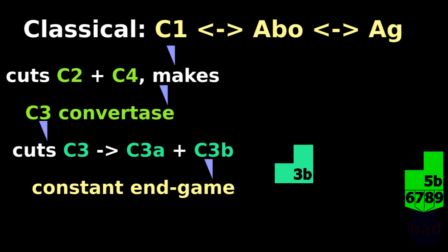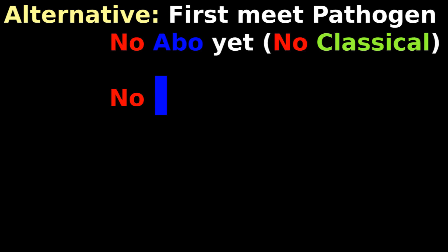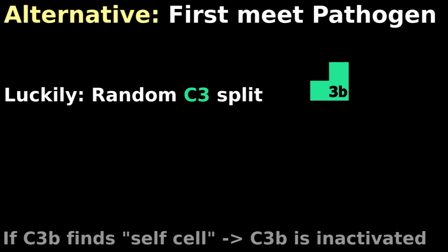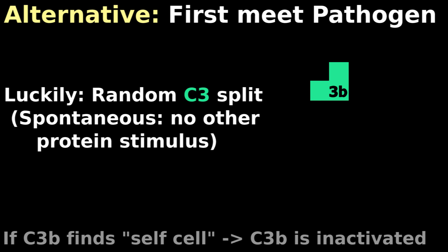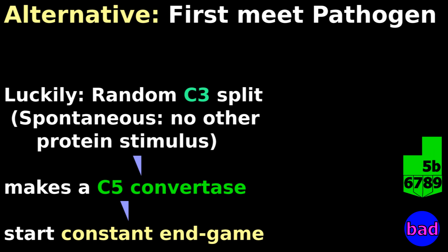There is also the alternative pathway for the first time your body meets a pathogen, and you have not yet learned how to make antibodies. If you don't have antibodies to activate C1 classically, luckily C3 randomly splits into C3A and C3B just on its own without other proteins telling it to. This random splitting also makes a C5 convertase, which continues into the constant endgame.